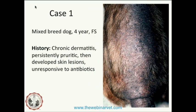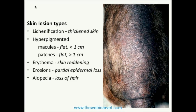Case 1: a McSprie dog, 4-year-old female spayed, with chronic dermatitis, persistently pruritic, developed skin lesions unresponsive to antibiotics. In each of these cases we'll deconstruct them by identifying the skin lesion types present. This patient has clear evidence of lichenification — thickening of the skin — with accentuation of the skin surface folds, palpably thick skin, and hyperpigmentation.